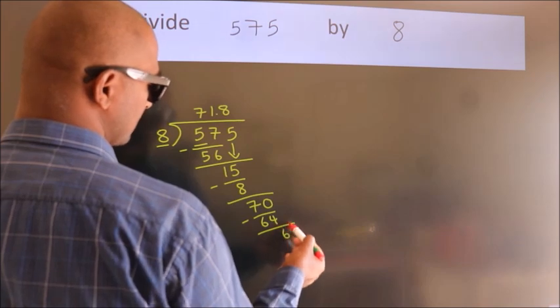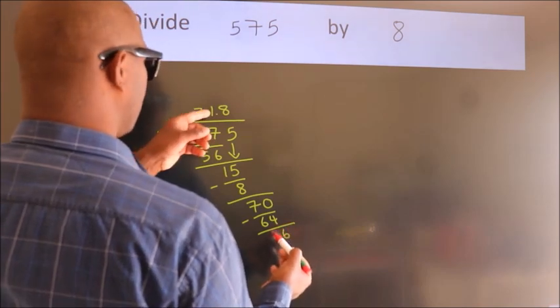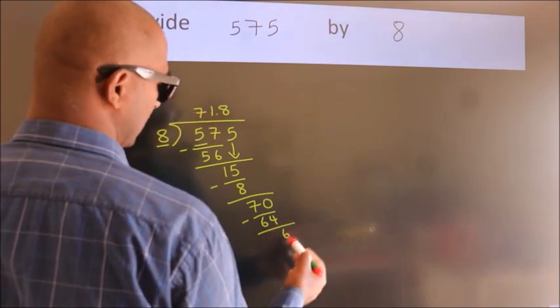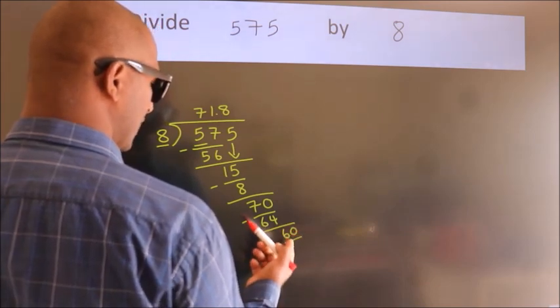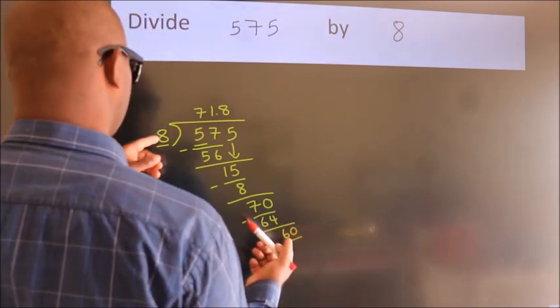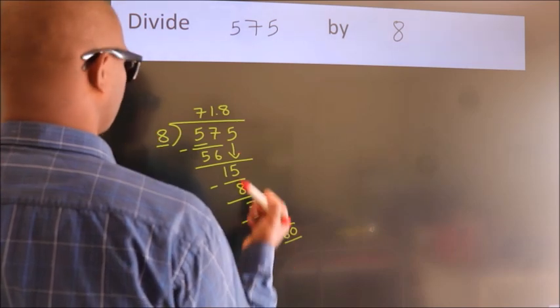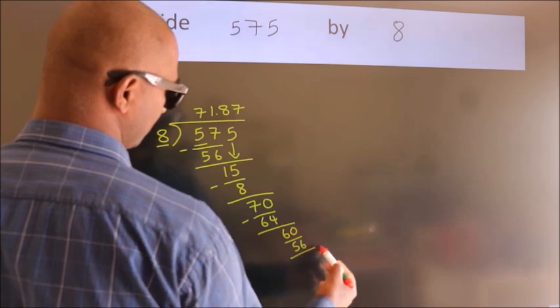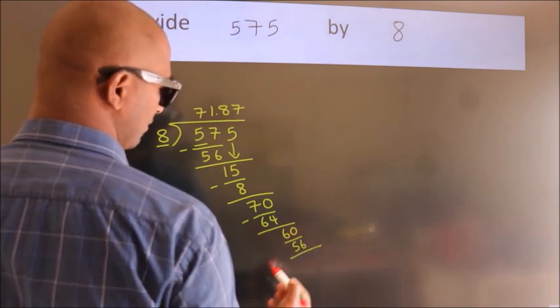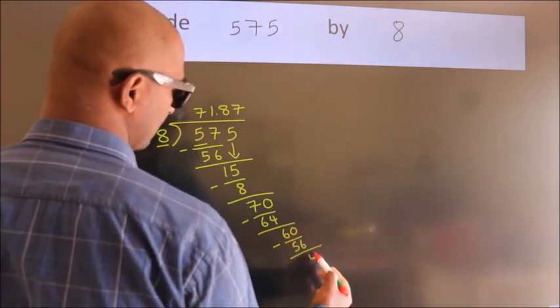After this, we already have the decimal, so directly take 0, making 60. A number close to 60 in the 8 table is 8 times 7, which is 56. Now, we subtract and get 4.